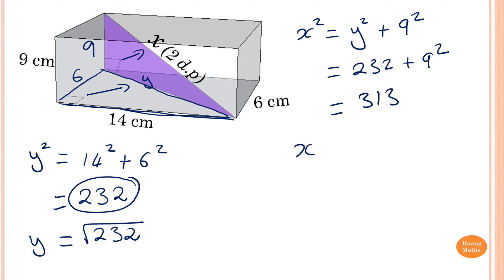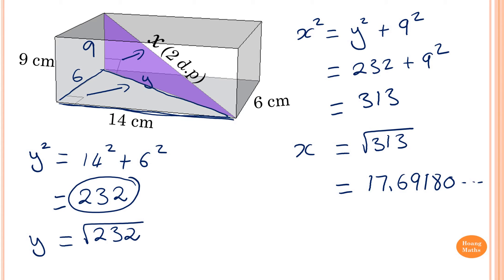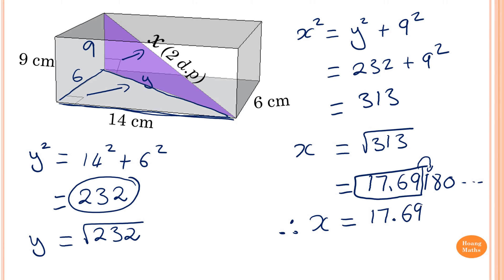Therefore x equals the square root of 313, which gives 17.6918 and so on. Rounding to 2 decimal places, we look at the digit after the second decimal: the digit after 9 is 1, which is less than 5, so we round down. The answer is x equals 17.69 centimeters.